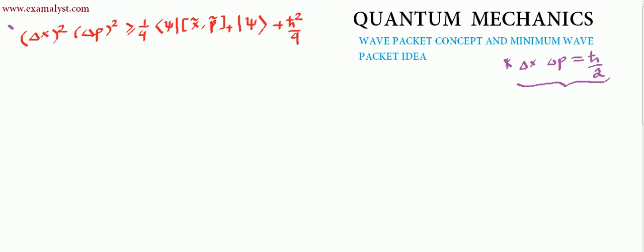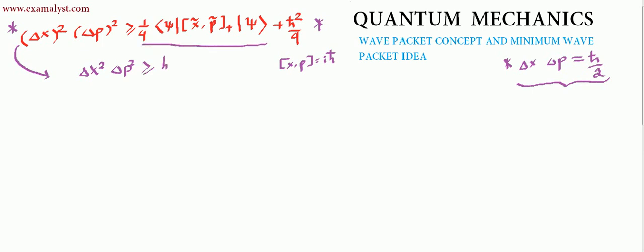Two lectures back we discussed trying to prove the Heisenberg uncertainty principle using the commutation relation — establishing a relation between the commutation relation and the Heisenberg uncertainty principle. We reached a certain platform in between, and from there it is clear that Δx² · Δp² is greater than ℏ²/2, because the first term is positive definite. So in general this is true.